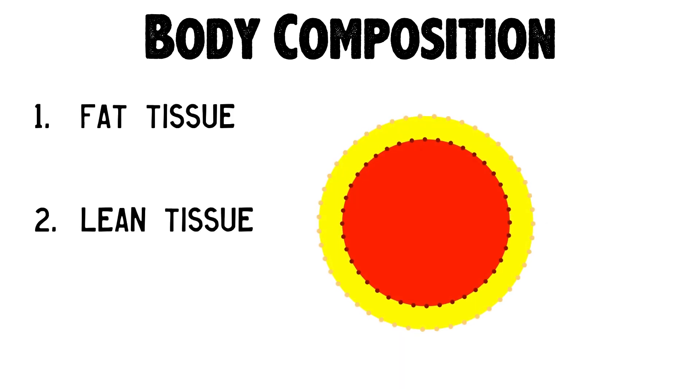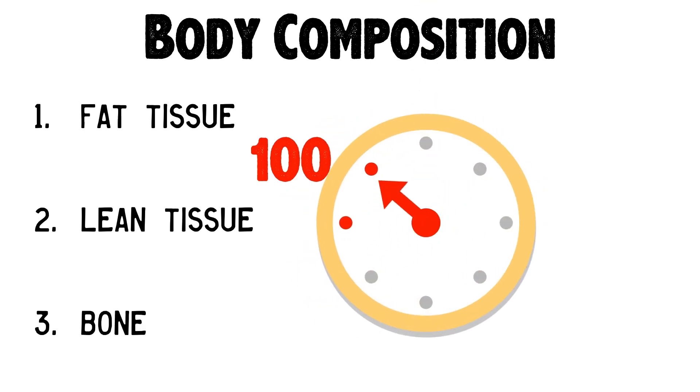I think we can decipher this brain teaser with a basic understanding of body composition. Very simply, our bodies are composed of many things including muscle, skin, organs, fat, and bones. Usually though, our body composition is broken down as follows: one, fat tissue; two, lean tissue, which is mainly muscle; and three, bone.